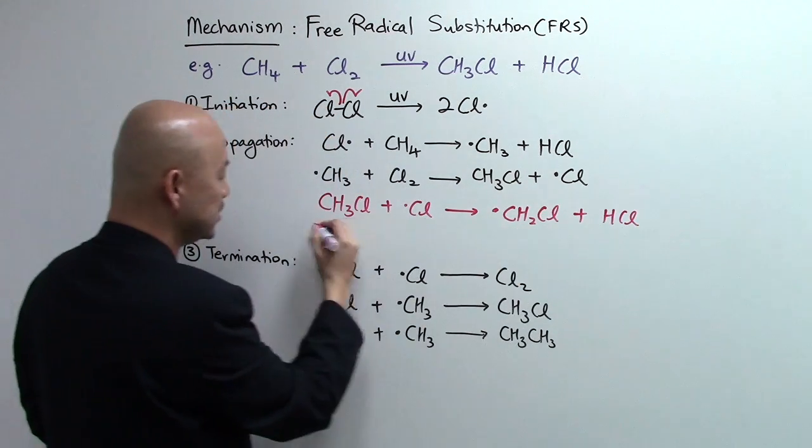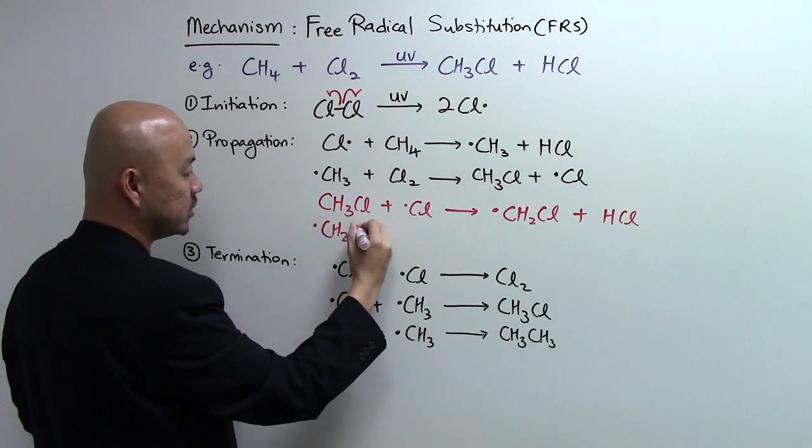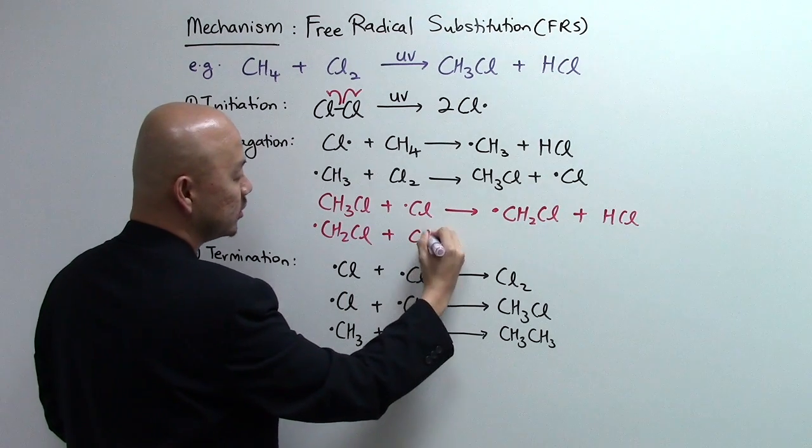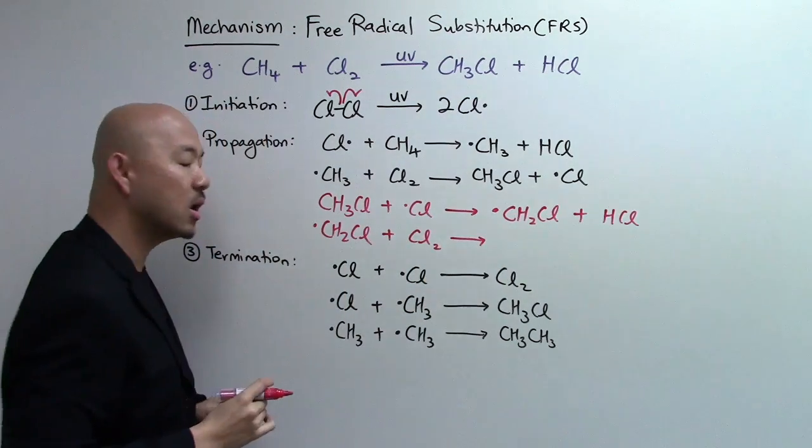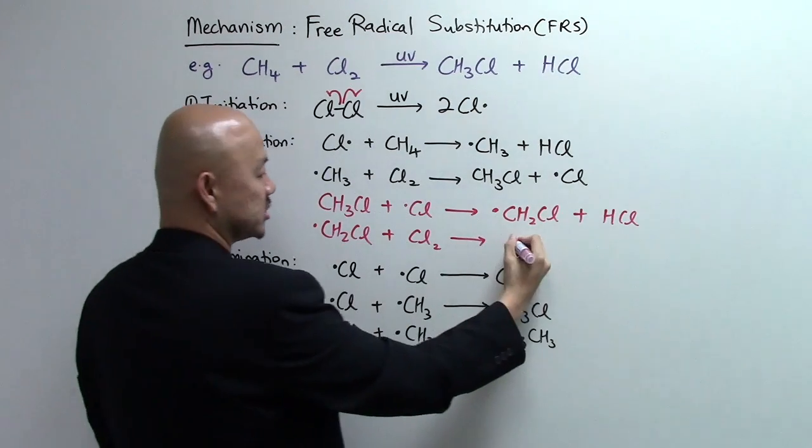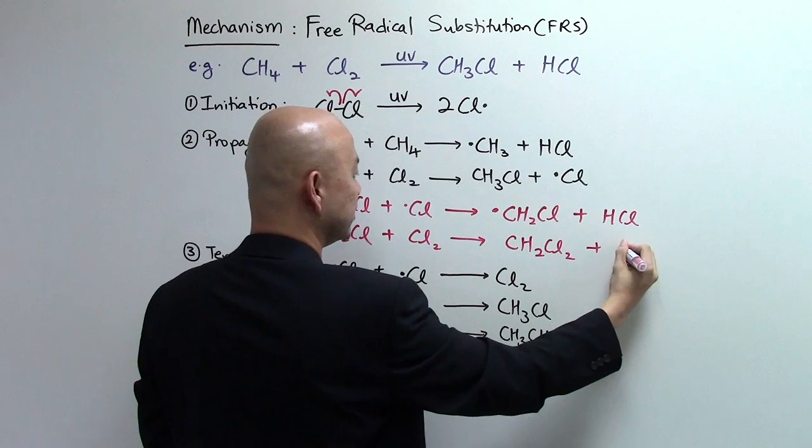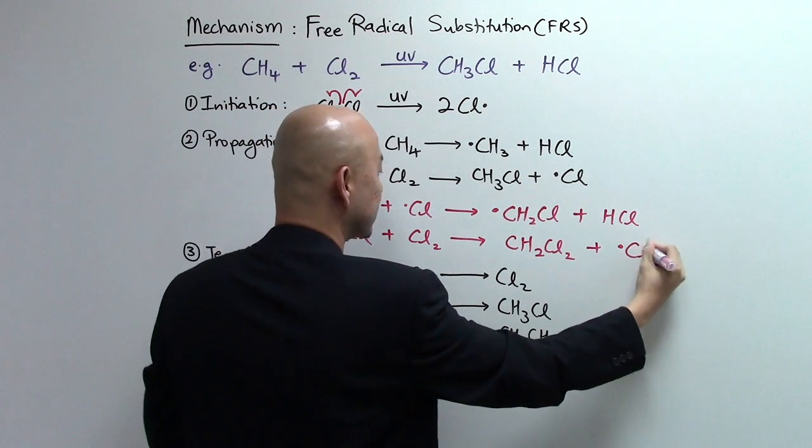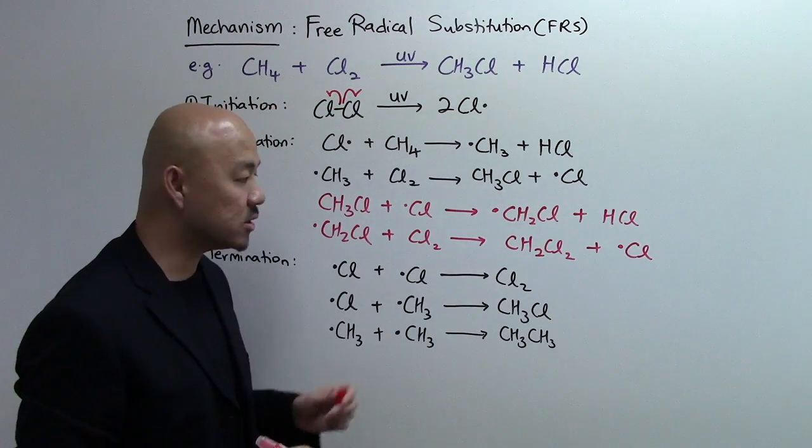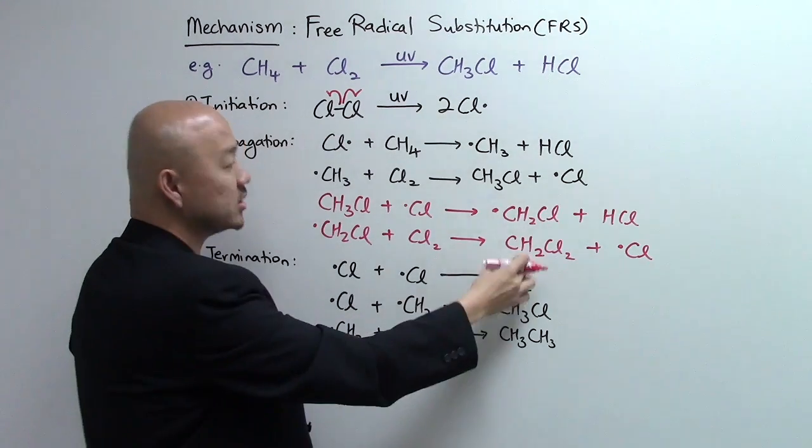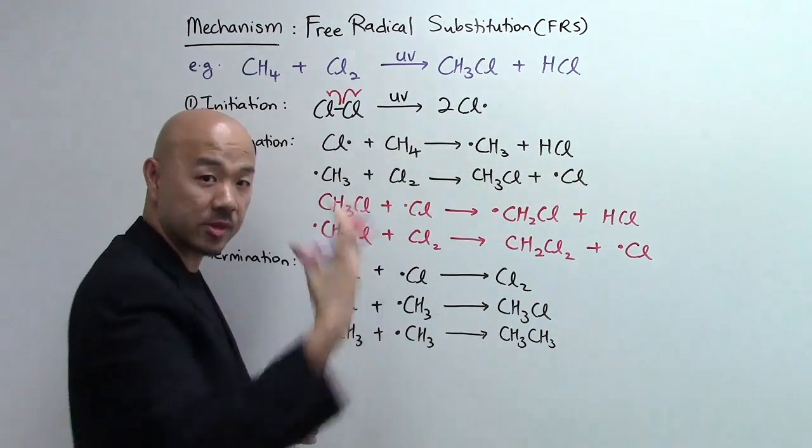This radical will carry on to react with a new molecule of chlorine such that you'll get the product CH2Cl2 and your chlorine radical. This is your dichloromethane which is not the product that you want, chloromethane.